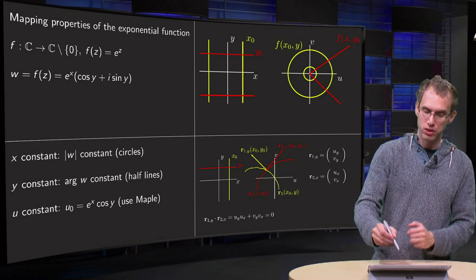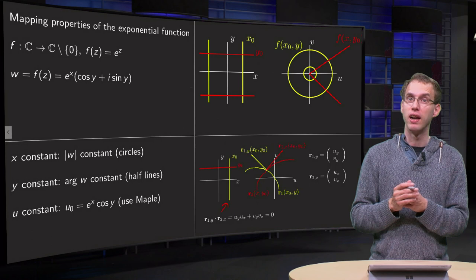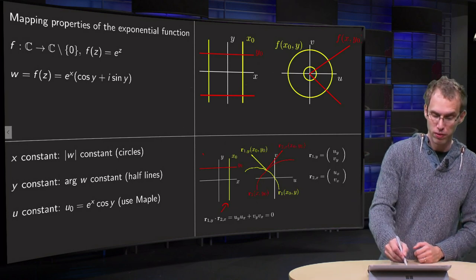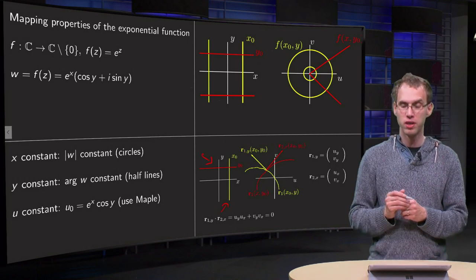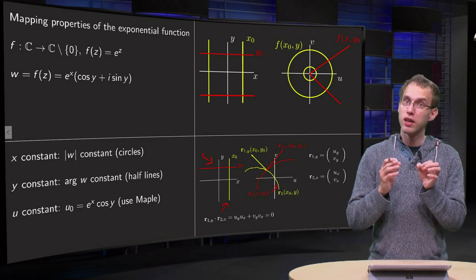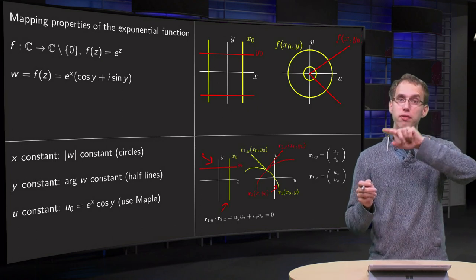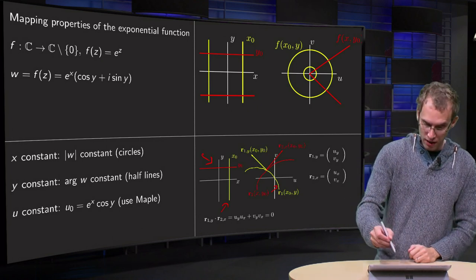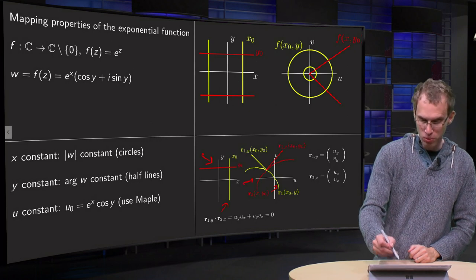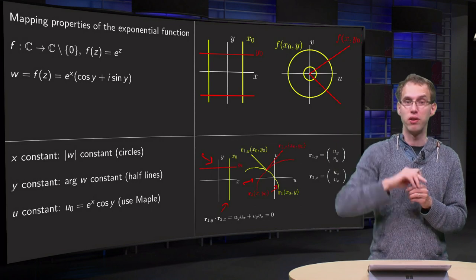So let's look at the curve in the uv plane where x is constant and the curve in the uv plane where y is constant. So the yellow curve r1(x0, y), where y is the parameter varying throughout the curve, and the red one r2(x, y0), where y0 is constant and x is varying throughout the curve.